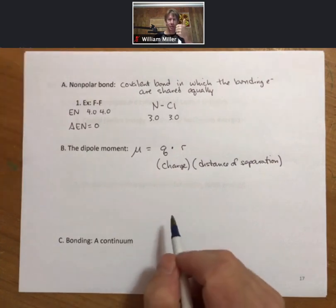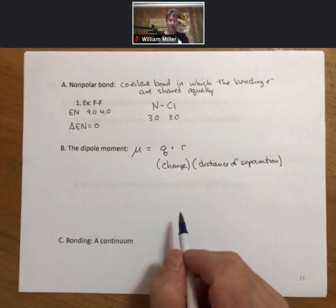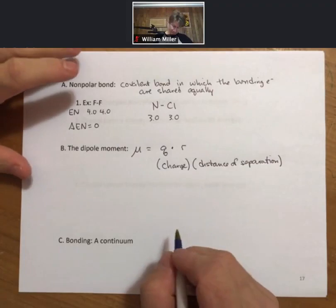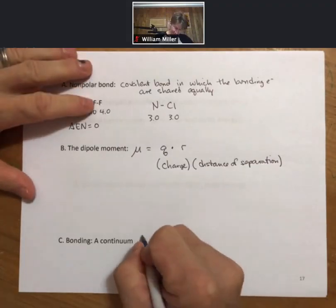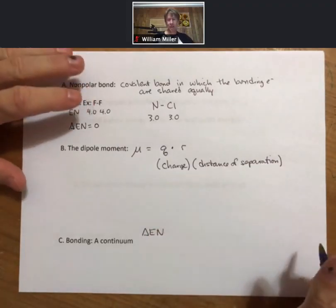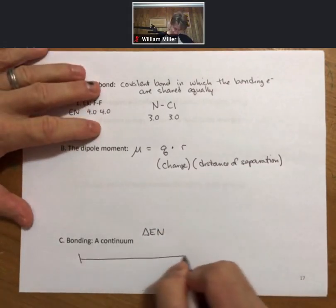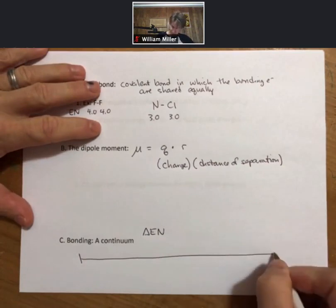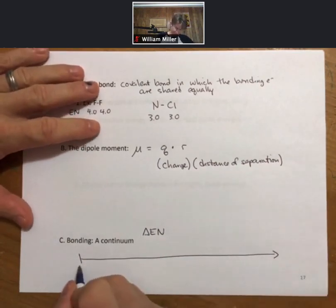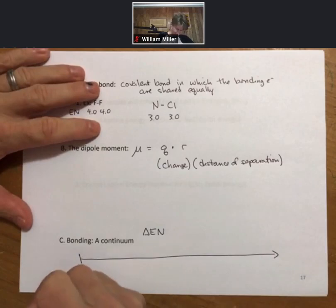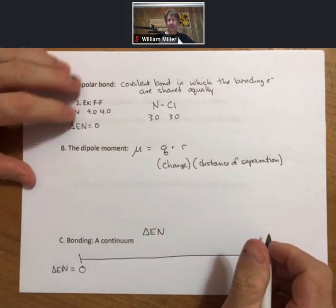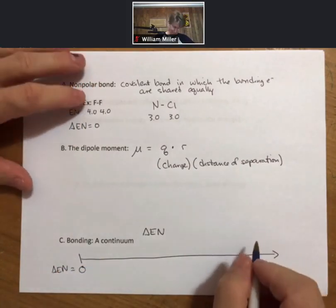We've talked about polar covalent bonds, nonpolar covalent bonds, and ionic bonds. One definition of the difference between them is in terms of differences in electronegativity. If we start here and draw a line, this is a difference in electronegativity of zero. That's the definition of a nonpolar covalent bond.